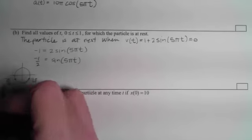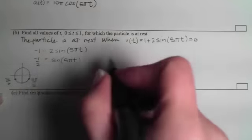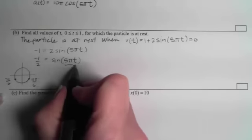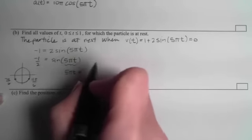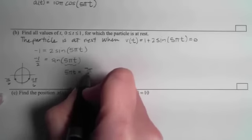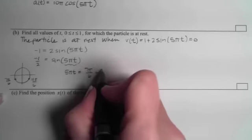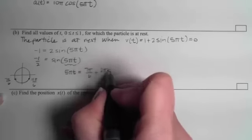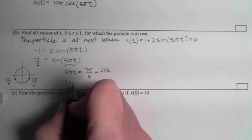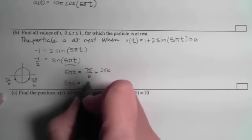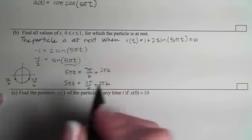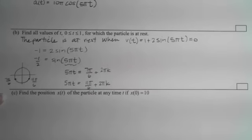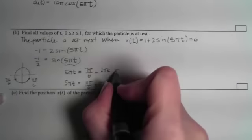We can continue to go around and around, so the inside of the sine function, that 5πt, needs to be 7π/6 plus a multiple of 2π.